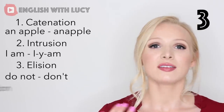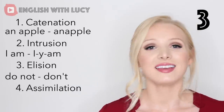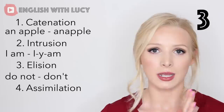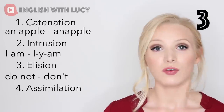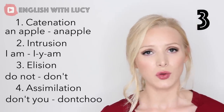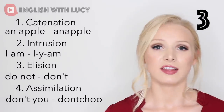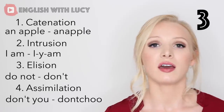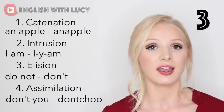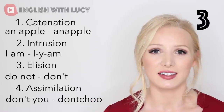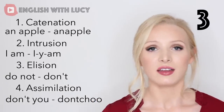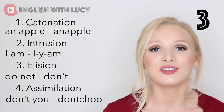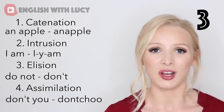Lastly, we have assimilation. This is where two phonemes come together and change into a new phoneme, which is easier to say. For example, 'don't you' becomes 'don't you' — that's because 't' and 'yuh' come together to make a 'ch' sound. 'Don't you like it?' — 'Don't you like it?' And 'd' and 'yuh' come together to make a 'juh' sound. For example, 'did you like it?' — 'Did you like it?'